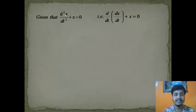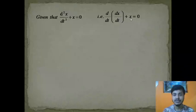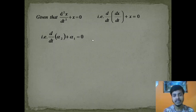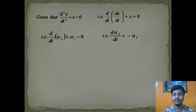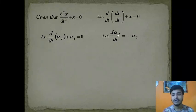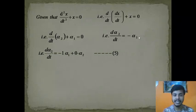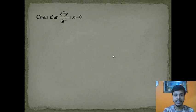We write d²x/dt² as d/dt of (dx/dt), so d/dt(dx/dt) + x = 0. Substituting dx/dt = α₂ and x = α₁, and taking α₁ to the right, we get d/dt of α₂ = −α₁. This can be written as d/dt of α₂ = −1·α₁ + 0·α₂. This is equation 5.